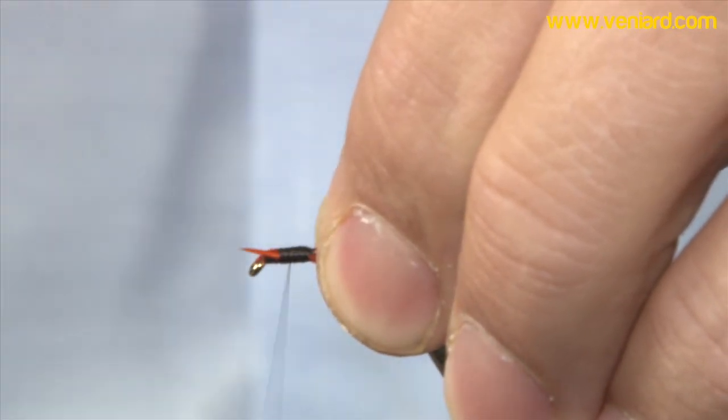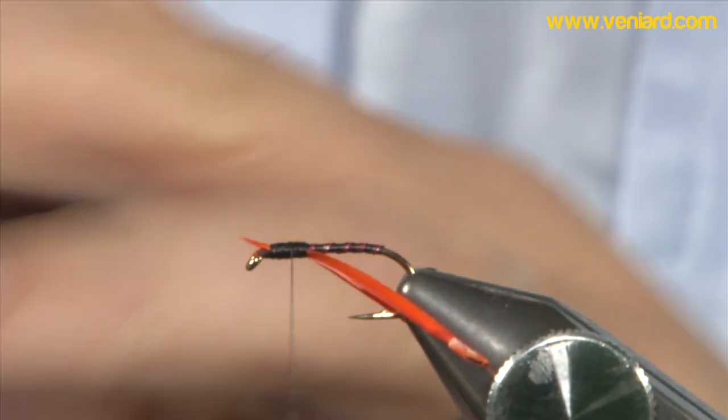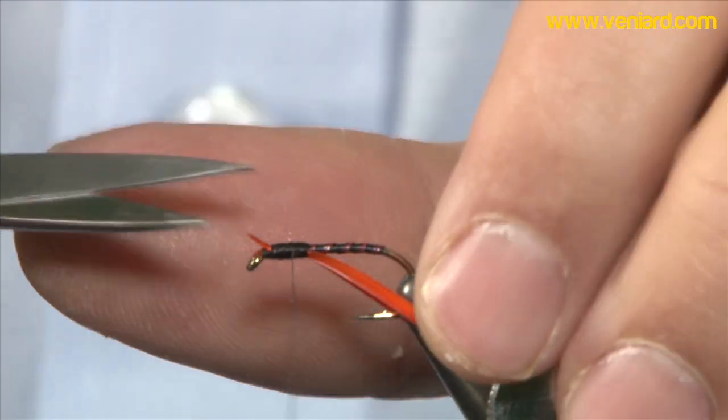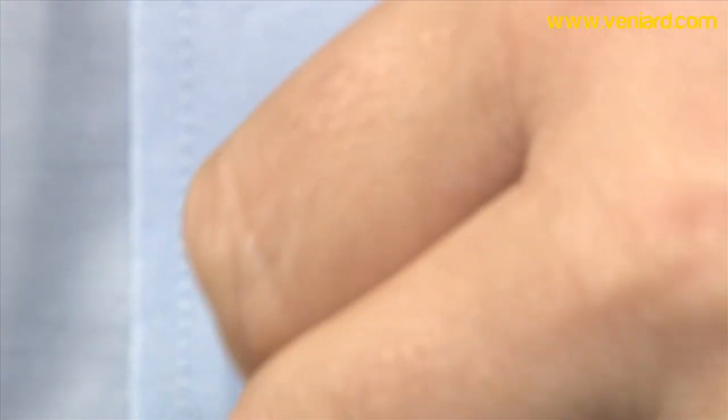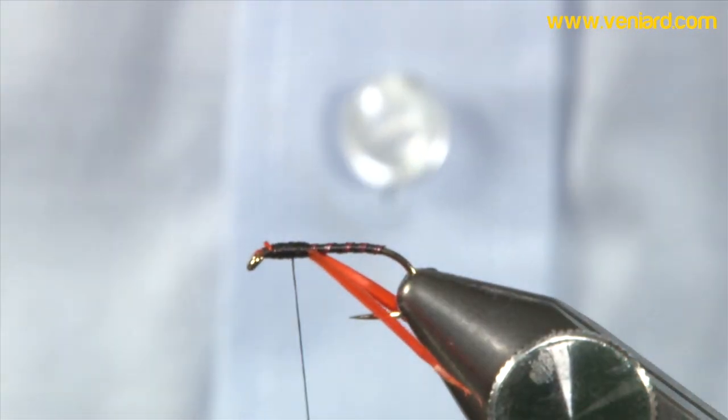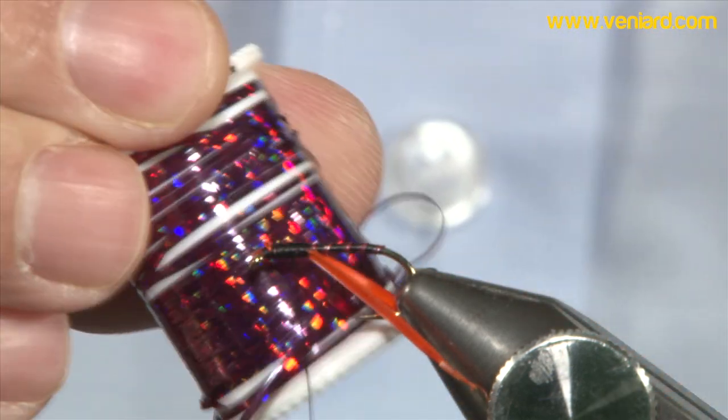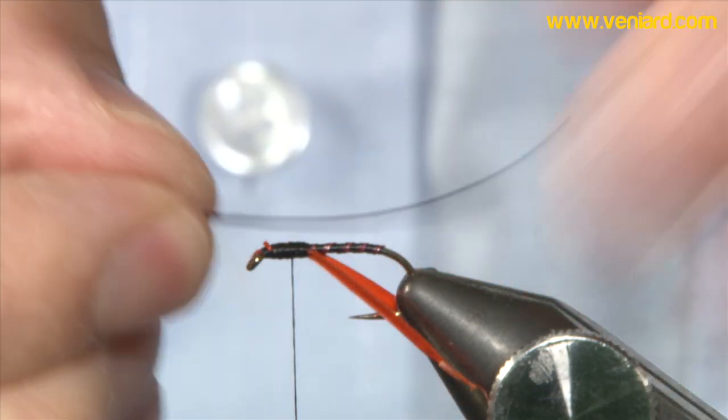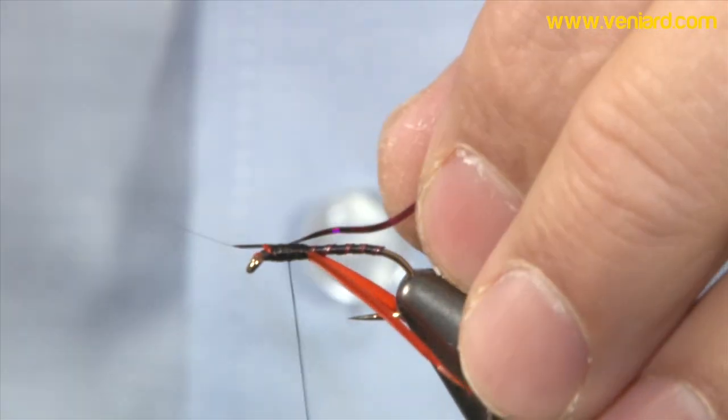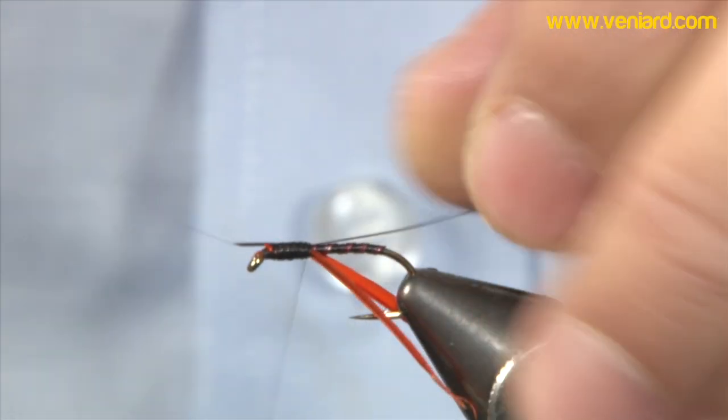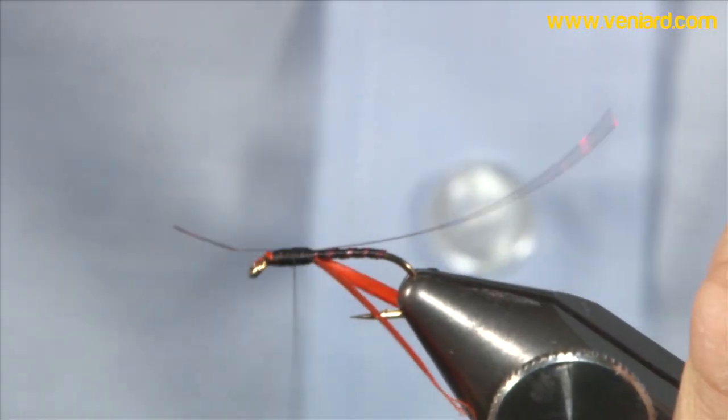Cover everything over with your floss. Any straight ends, just come in with your scissors. Snip. And then we've got this wonderful claret, holographic. Very understated. Clutch that in on top of the hook shank. Make sure it's nice and straight. Like so. Again, cover everything up with the floss.